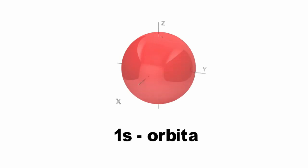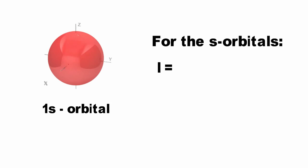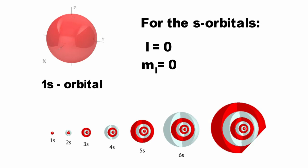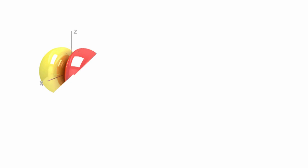For the S orbitals, L equals 0. Therefore, m sub-L has only one permitted value, 0. This means that for any one value of N, there is only one type of S orbital.